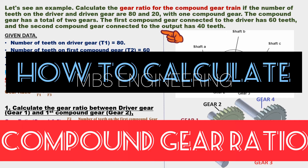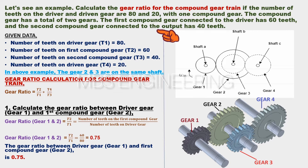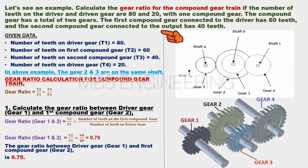We learn how to calculate the gear ratio for the compound gear train with an example. Calculate the gear ratio if the number of teeth on the driver and driven gears are 80 and 20 respectively, with 1 compound gear. The compound gear has 2 gears total: the first compound gear connected to the driver has 60 teeth, and the second compound gear connected to the output has 40 teeth.